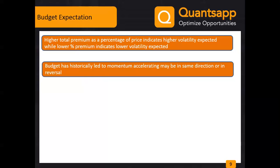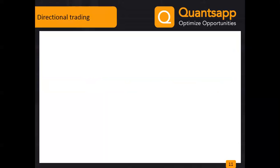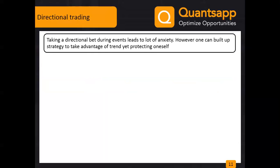Now we can find out the price mechanism and expected price range. In directional trading for budget, at times we want to take a directional bet but due to event anxiety we square off profitable trades or hesitate to enter new positions. If you are very strong on a directional bet, you can take strategies suitable for that bet while still protecting yourself.